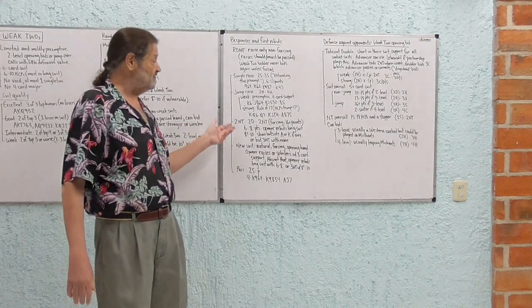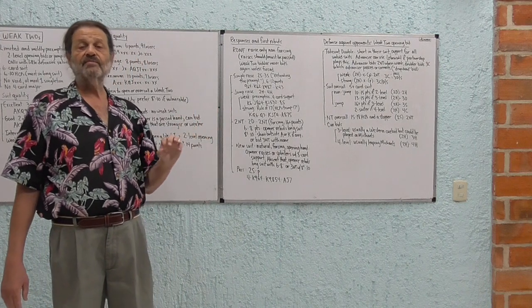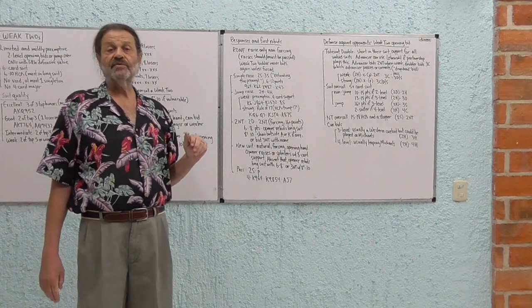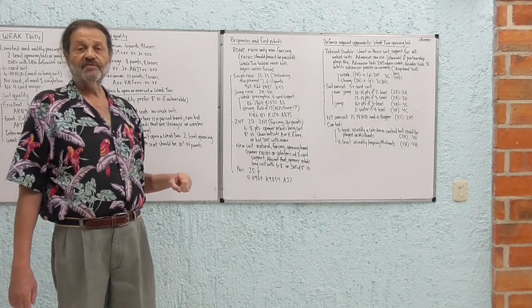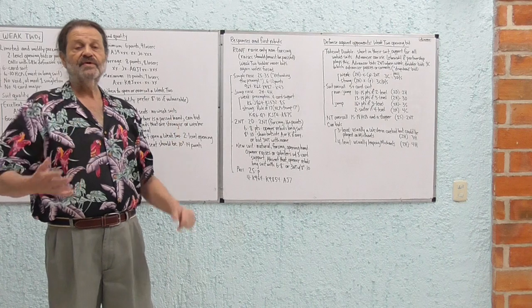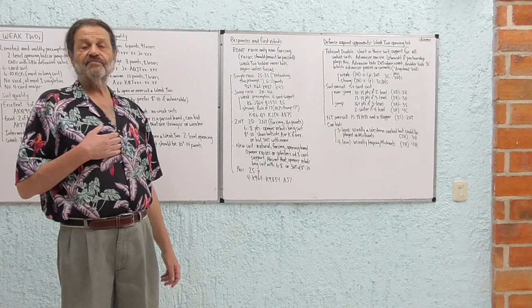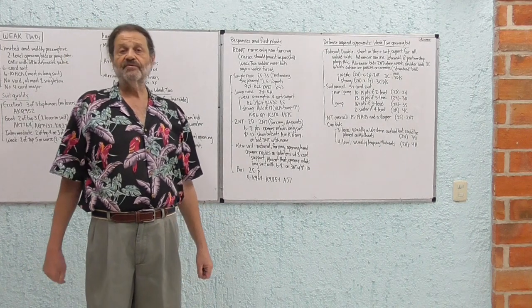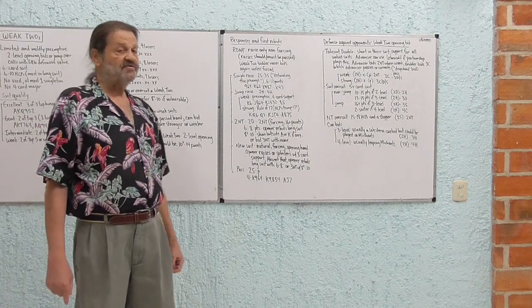And there's another form of Ogust called modified Ogust, where the answers are based on losing trick count rather than points. So, for example, after two hearts, two no trump with, say, eight losers, I believe the bid there is three hearts. It's a system. If you're interested, you can look that up on the internet as well, modified Ogust. Okay, that's it for today.